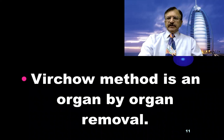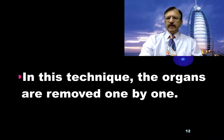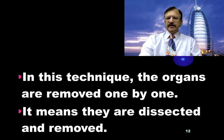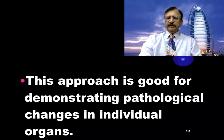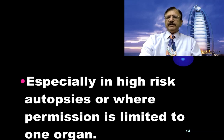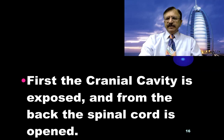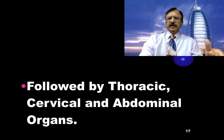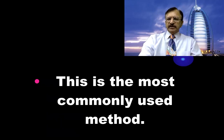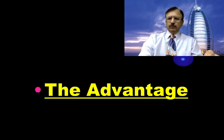Regarding Virchow's technique, this method is an organ-by-organ removal. The organs are removed one by one — they are dissected and removed individually. This approach is good for demonstrating pathological changes in individual organs, and especially in high-risk autopsies or where permission is limited to one organ. First the cranial cavity is exposed, then from the back the spinal cord is opened, followed by the thoracic, cervical, and abdominal organs. This is the most commonly used method.